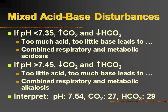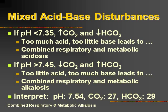Let's interpret this: pH of 7.54, CO2 of 27, and a bicarb of 29. The pH — is it within range of 7.35 to 7.45? No, it's outside on the upper end, making our patient alkalotic, and it's uncompensated. The CO2 of 27 — normal range is 35 to 45, so 27 is too low, not enough acid, which would cause alkalosis. The bicarb of 29 — normal is 22 to 26, so we have too much base, which also causes alkalosis. So we have a combined respiratory and metabolic alkalosis.